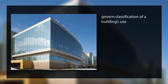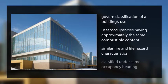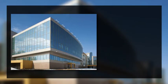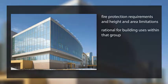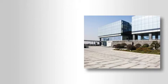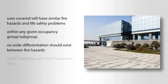The factors that govern the classification of a building's use must be carefully considered so that those uses or occupancies having approximately the same combustible content and similar fire and life hazard characteristics will be classified under the same occupancy heading. Occupancies should be grouped so that fire protection requirements and height and area limitations applicable to the occupancy groups are rational for all building uses within that group. Every classification must be based on the premise that uses covered by each will have similar fire hazards and life safety problems. No wide differentiation should exist between the fire hazards of the most hazardous and the least hazardous uses. The occupancy groups include 10 major classifications.